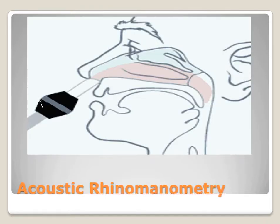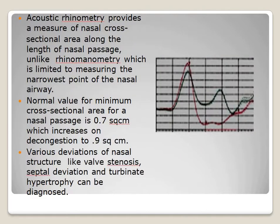Acoustic rhinometry provides a measure of nasal cross-sectional area along the entire length of the nasal passage, unlike rhinomanometry which is limited to measuring the narrowest point of the nasal airway. The normal value of the minimal cross-sectional area for a nasal passage is 0.7 square centimeters, which increases on decongestion to 0.9 square centimeters. Various deviations of nasal structures such as wall stenosis, septal deviation, and turbinate hypertrophy can be diagnosed.